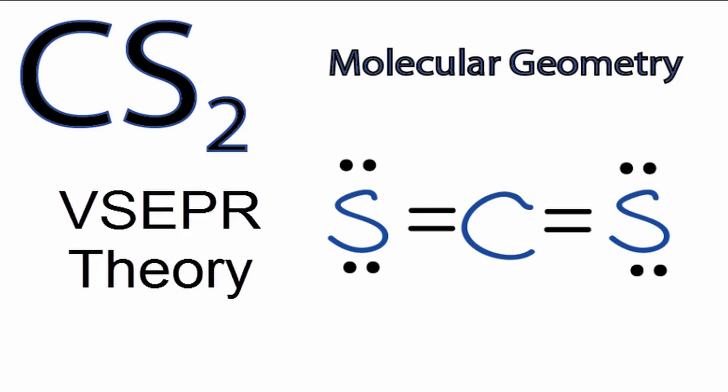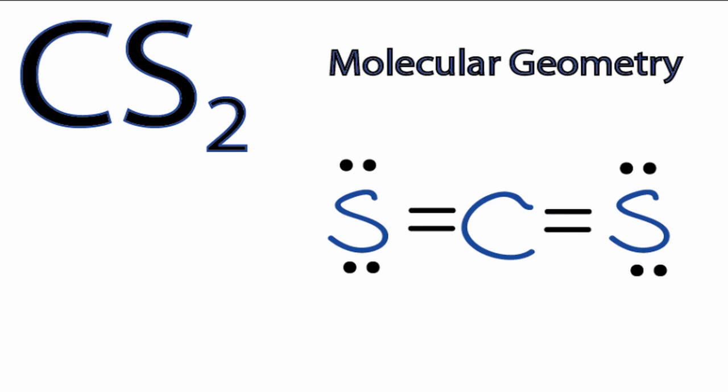According to valence-shell electron pair repulsion theory, those two sulfur atoms are going to push away from each other and be as far as they can be from each other and still be bonded to the carbon. So when they do that, that gives us a structure that looks like this.